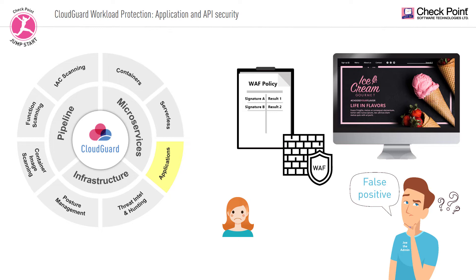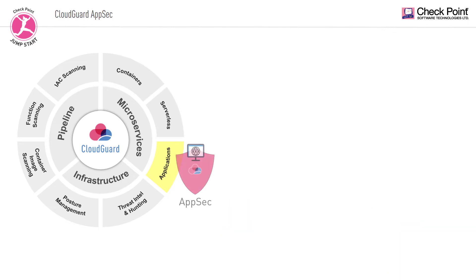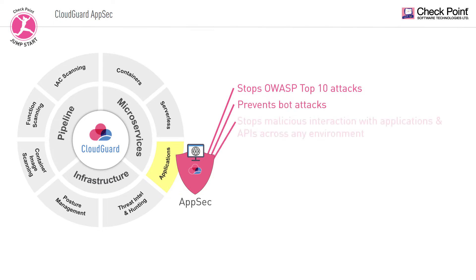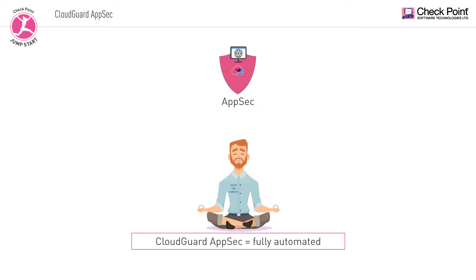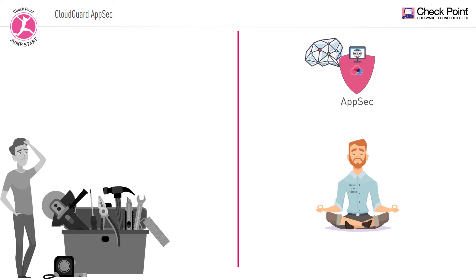Faced with these threats and the gap left by legacy WAFs, CloudGuard AppSec can stop OWASP Top 10 attacks, prevent bot attacks, and stop any malicious interaction with applications and APIs across any environment. CloudGuard AppSec is fully automated and leverages contextual AI analysis to provide precise threat prevention for modern web applications, lessening the need for ongoing administration and increasing applications' security at scale. Gone are the days where rules had to be tuned manually with exceptions every time an update to the web application or API was necessary.